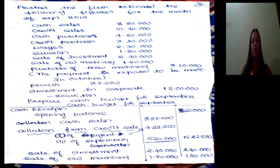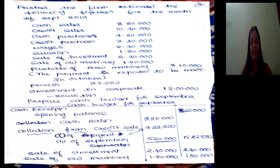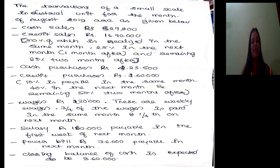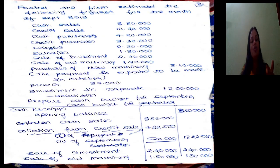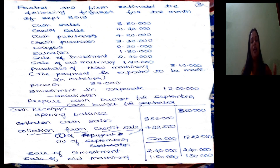We also have information for September. The firm estimated the following figures for September: cash sales (collected in September itself), credit sales (collection pattern same as August — 50% same month, 25% next month, 25% month after), cash purchases, credit purchases, wages, salary, sale of investment, sale of old machinery, purchase of new machinery (payment expected in October), power bill, and investment in corporate securities.